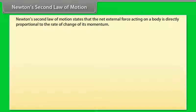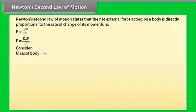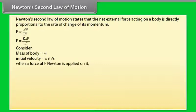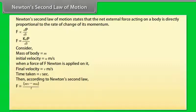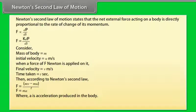Newton's second law of motion states that the net external force acting on a body is directly proportional to the rate of change of its momentum. Consider a body of mass M initially moving with velocity U m/s. When a force F Newton is applied, its velocity becomes V m/s after time T seconds. Then, according to Newton's second law: F = (MV − MU) / T = MA, where A is the acceleration produced.